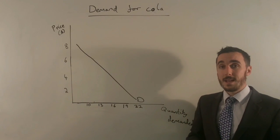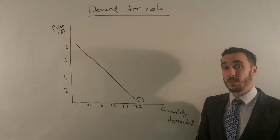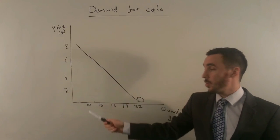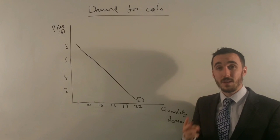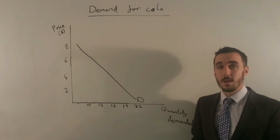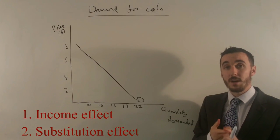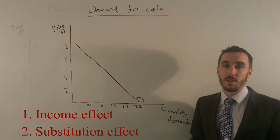Law of demand states that as the price of a good or service goes down, the quantity demanded goes up. Now there are two specific reasons why that happens. These are the income effect and the substitution effect.